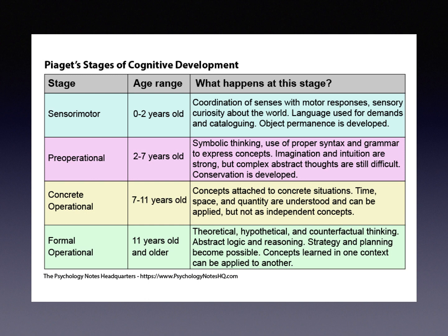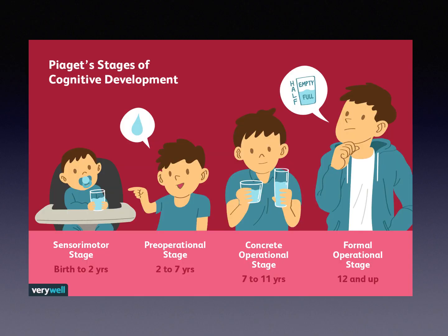In the concrete operational stage, concepts are attached to concrete situations, so space, time, and quantity are beginning to be understood. We have to wait until 11 or 12 plus to get really proper abstract theoretical thinking, where children are able to give opposing arguments, imagine hypothetical situations, and plan strategies. All of this and much more detail can be found on this website, and another useful website has a diagram that really helps show what the different stages of development are.